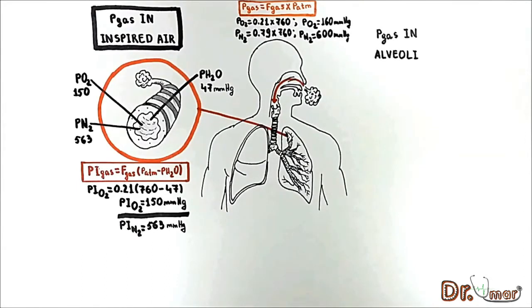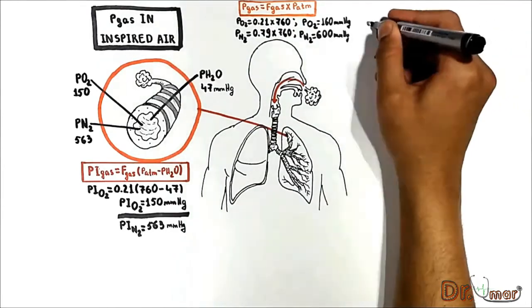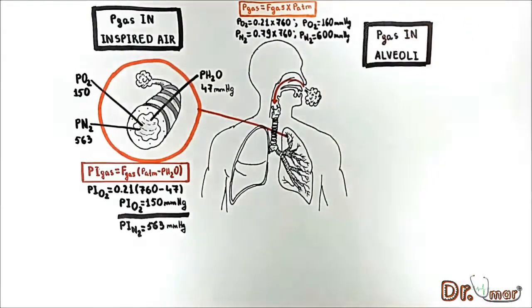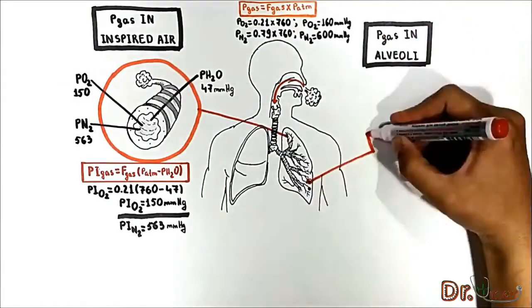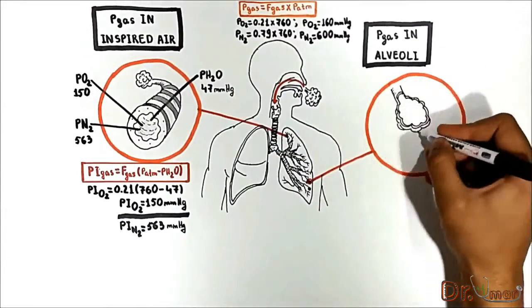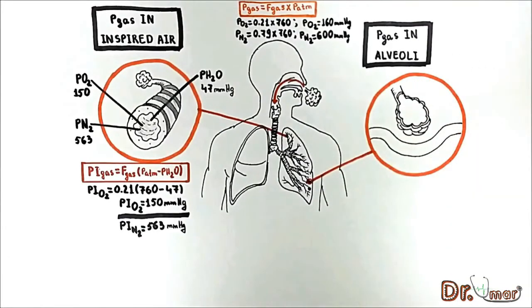Next, the air will reach the respiratory zone. Let us see the partial pressure of gases in alveoli. It is very important to note that the composition of inspired air is constant throughout the conducting zone of the lung where no gas exchange occurs. As the air reaches the respiratory zone, alveoli, the partial pressures of gases change.